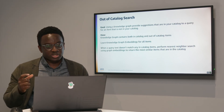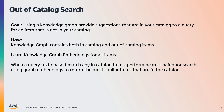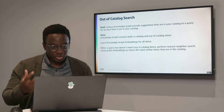The goal of out-of-catalog search is to use a knowledge graph to provide suggestions for items you don't have in your catalog when a user enters a query, and show them items in your catalog that are relevant to those out-of-catalog items. The IMDB knowledge graph contains both in-catalog and out-of-catalog items, and we learn knowledge graph embeddings for all of them using Neptune ML. When query text doesn't match any in-catalog items, we refer to the knowledge graph to find similar in-catalog items matching that query. A visual demo would actually be better, so let's go into that right now.